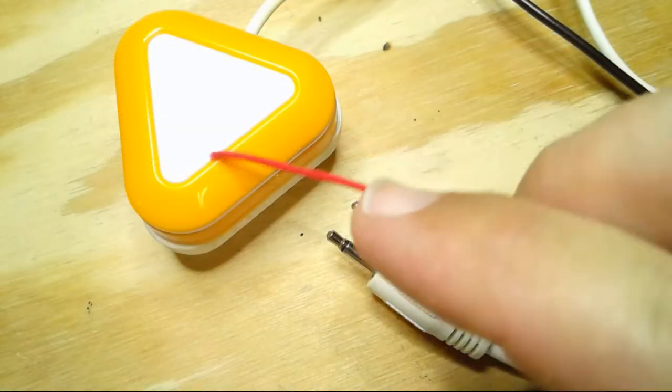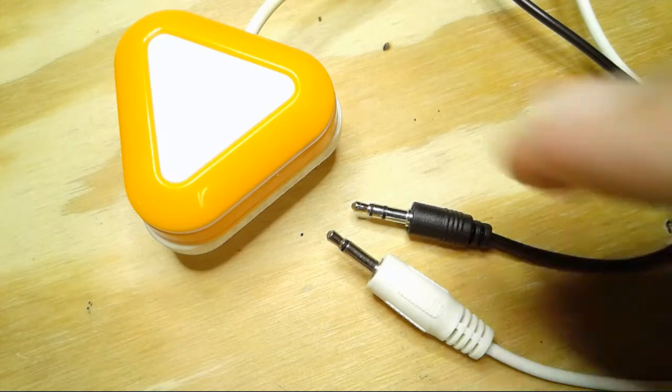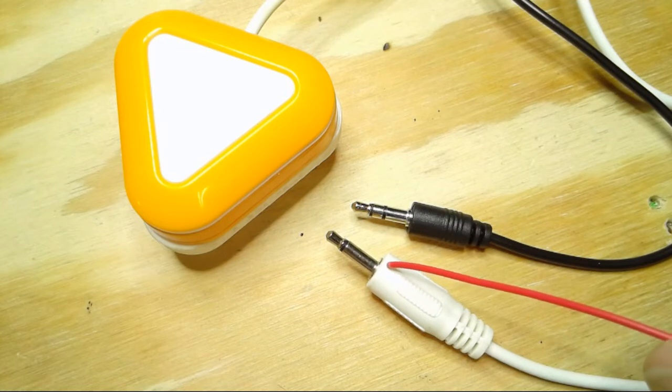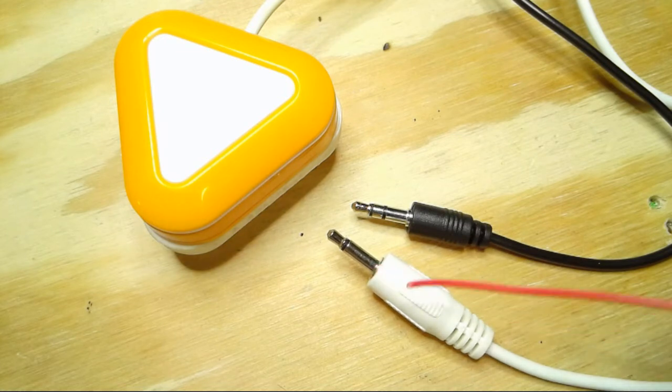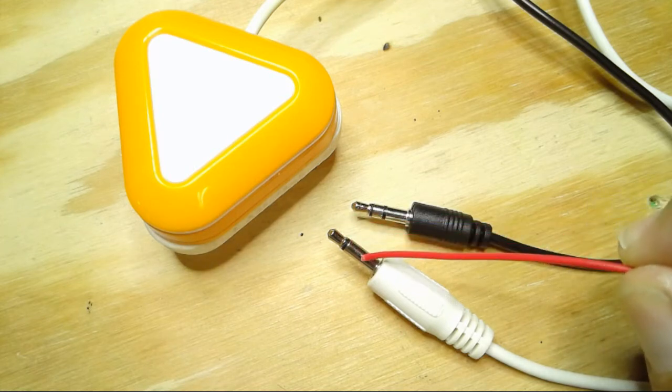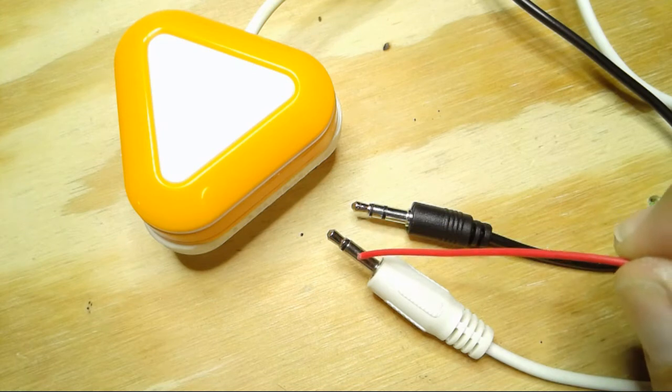So here you see a fairly standard AT switch. This is a Candy Corn from Ablenet. It's a proximity switch, kind of a high-end switch. You'll see here is its plug in white. And you'll notice that this is a standard 3.5mm plug, but it doesn't have the ring on it. It is a mono plug. It has just a tip and a sleeve.